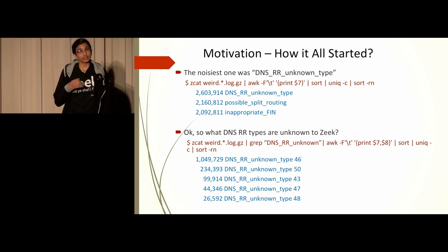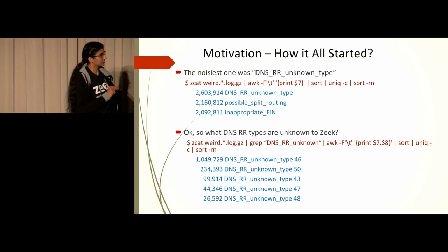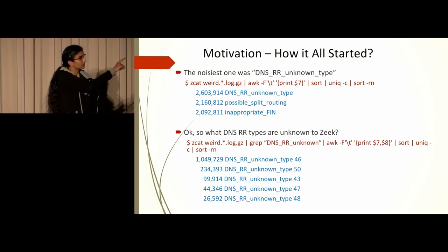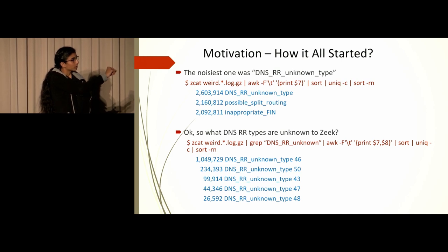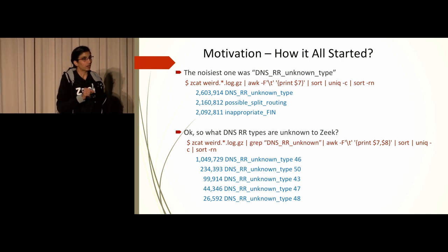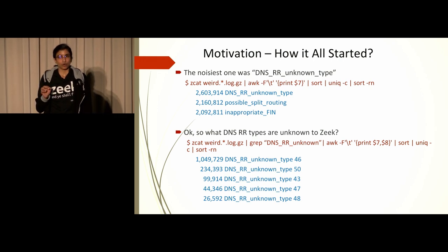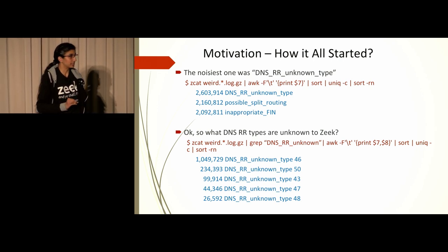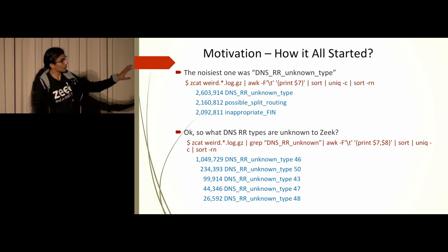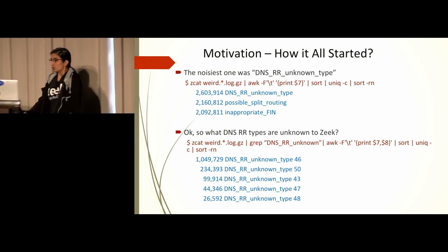The next question was: what RR types are currently unknown to Zeek? The second command also logs the integer ID that gets recorded alongside DNS_error_unknown_type, showing which error type ID is not being parsed. We found the five top ones, and the question then was what those five integer types are and what their corresponding RR type names are.